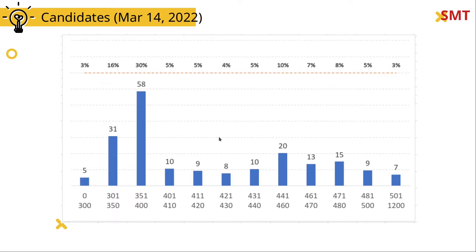As I've been very vocal in my previous videos, the average cutoff for invitation under federal programs is 475 points, plus or minus five to ten points. Before the trend shifted in 2022, where they started to focus more on CEC candidates versus FSW candidates. Keep these two points in mind: 196,000 candidates total, and the average cutoff is 475 points for the federal program.